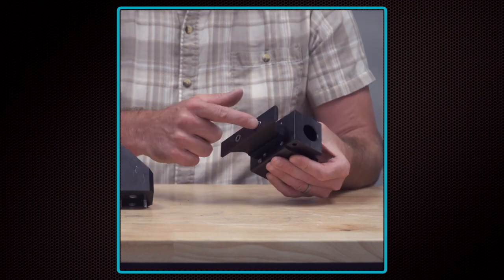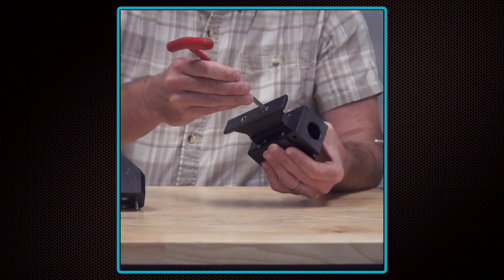The first step is to loosen the screws holding the dovetail rail on the bottom of the guide tube block and remove it.